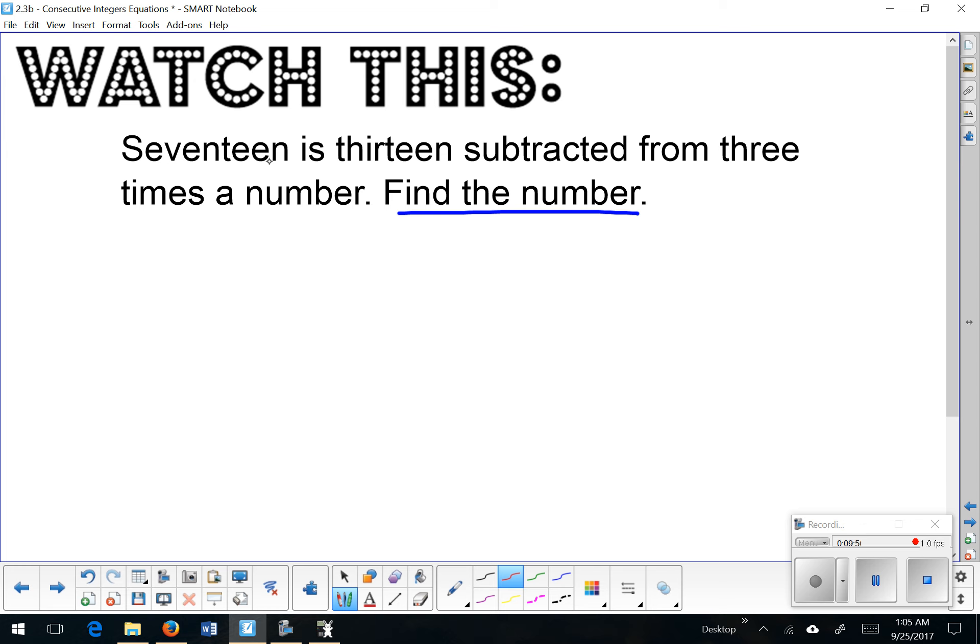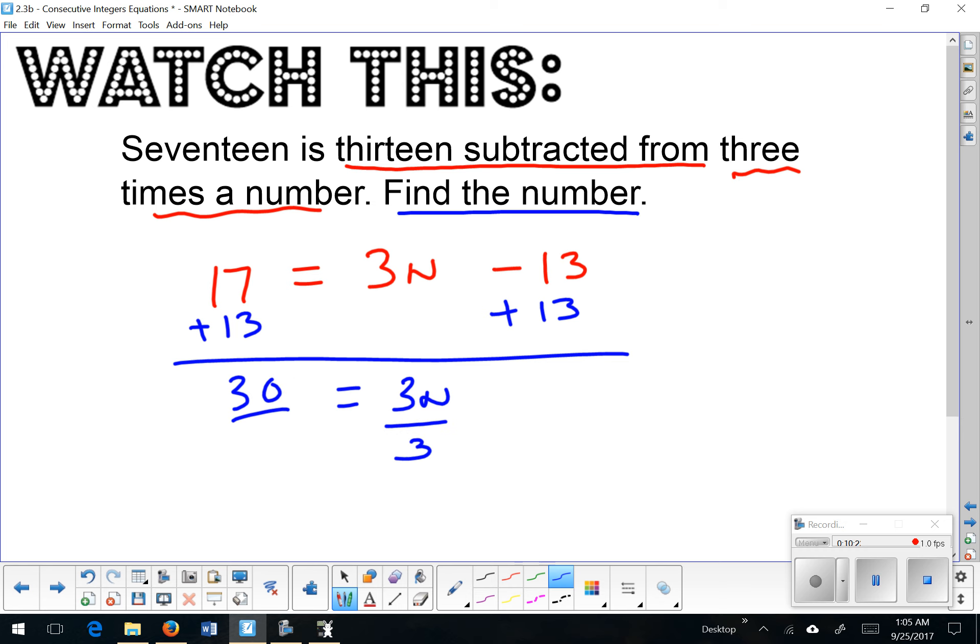17 is, so that means 17 equals. 13 subtracted from means something needs to come in front of the 13, three times a number, which I don't know, so we'll call 3n. So also on your homework tonight, you need to translate like this. Use your inverse properties to solve, and find your final solution. So my mystery number was 10.